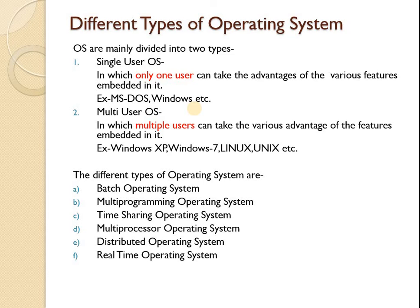In a multi-user operating system, multiple users can take advantage of the features embedded in it. It has features designed for multiple users, supports networking, and allows multiple user accounts. The data of one user is secured from another — no user can access another user's data, providing security and protection. Examples include Windows XP, Windows 7, and all Linux family operating systems.